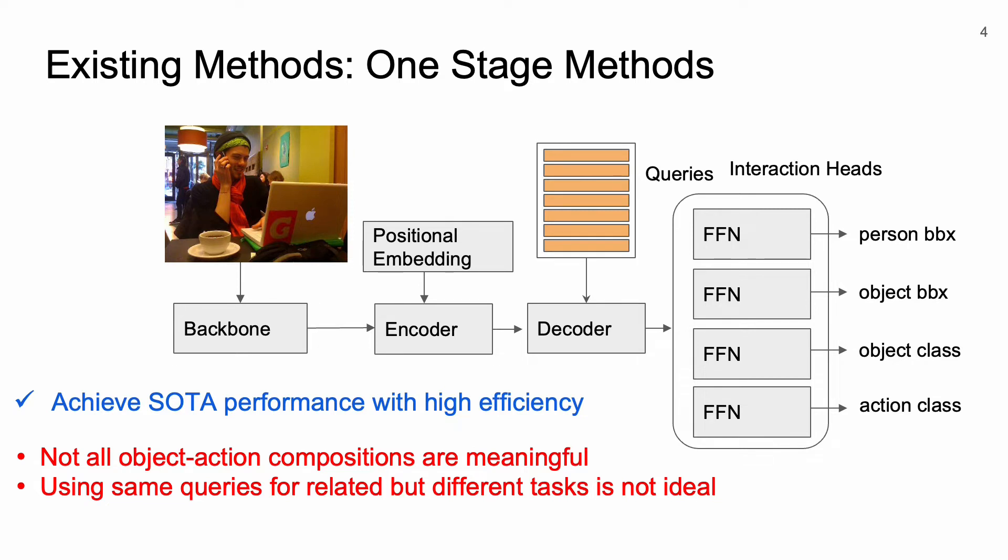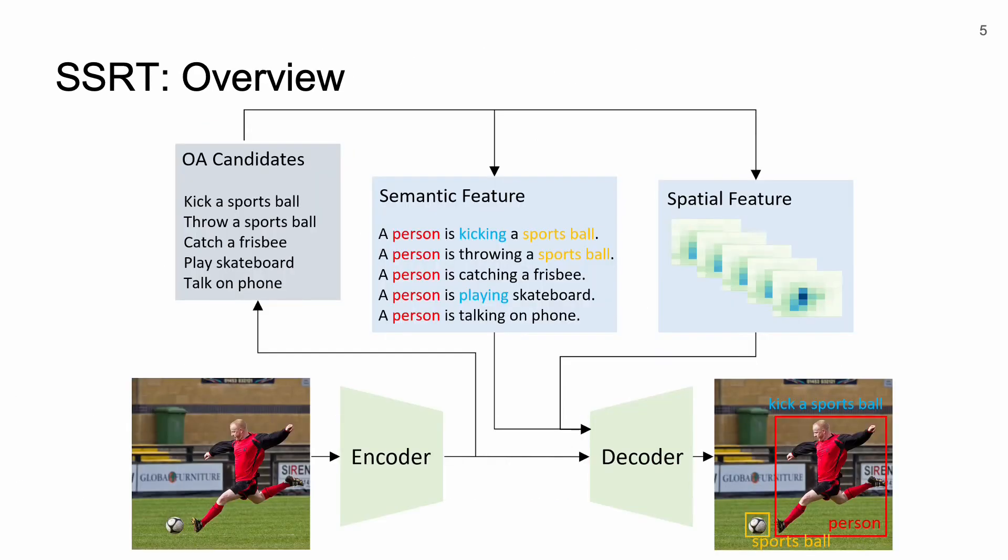Our proposed work deals with the mentioned issues of one-stage networks by utilizing support features. From the encoded feature map, we predict a subset of possible object-action candidates that help us to filter out meaningless object-action compositions. These predicted candidates are encoded to semantic and spatial support features which are used to refine queries. Now, let's have a look at our proposed architecture.